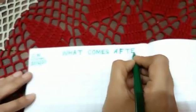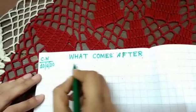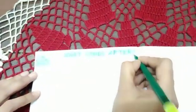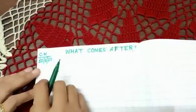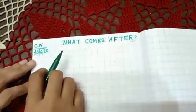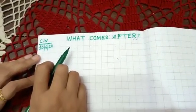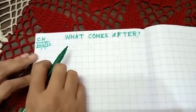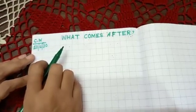after: A, F, T, E, R. What comes after. Okay children, write what comes after. Okay. Return.